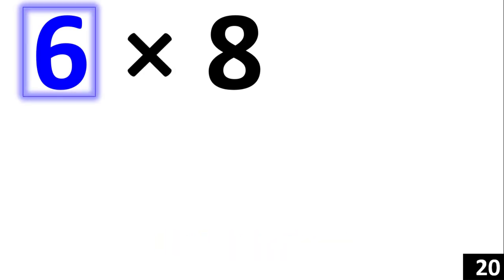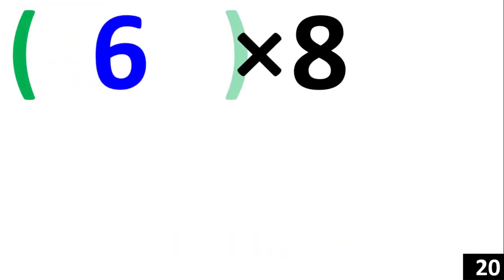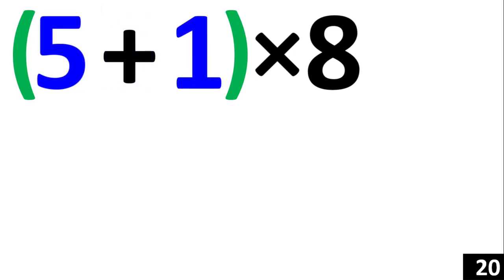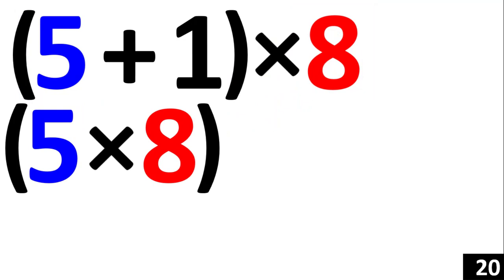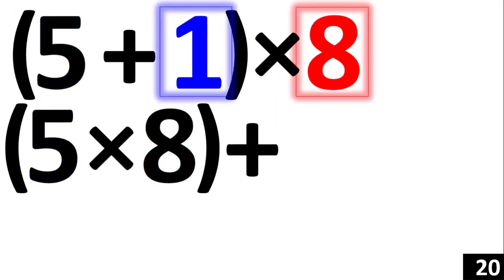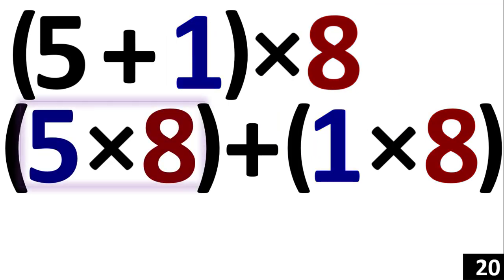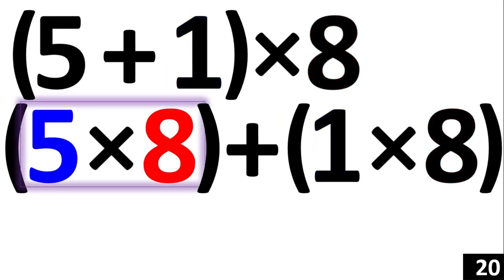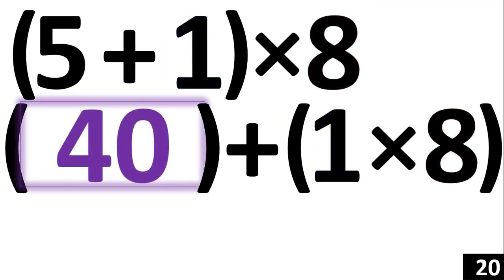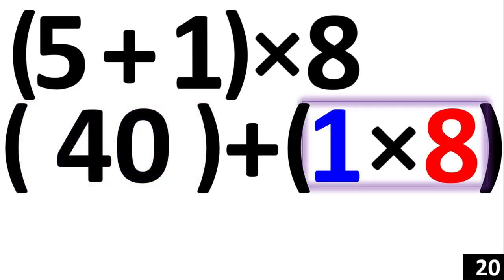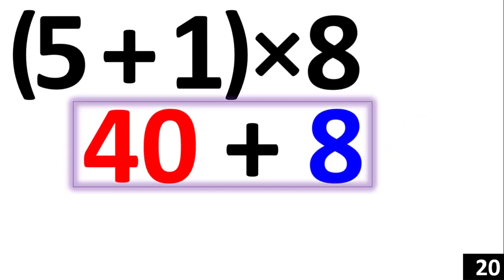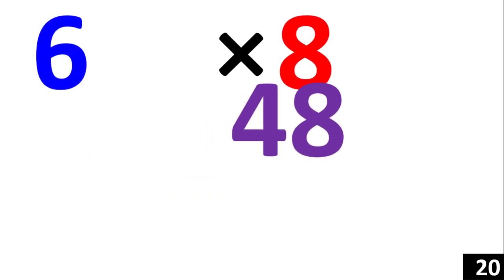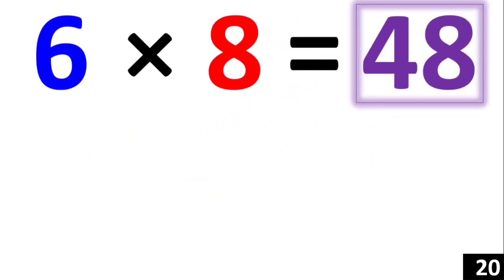For our last example, 6 times 8 is the same thing as 5 plus 1, times 8. Using the distributive property, we now have 5 times 8 plus 1 times 8. 5 times 8 is equal to 40, and 1 times 8 is equal to 8. Adding them together, 40 plus 8 is equal to 48. Therefore, 6 times 8 is equal to 48.